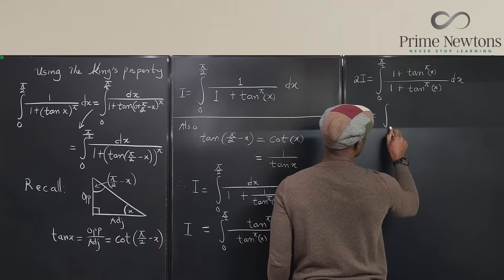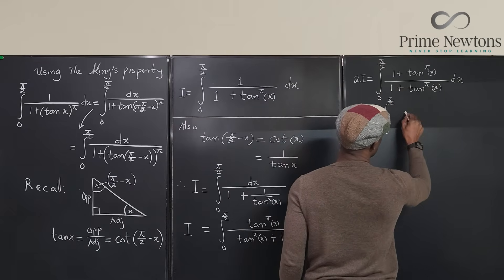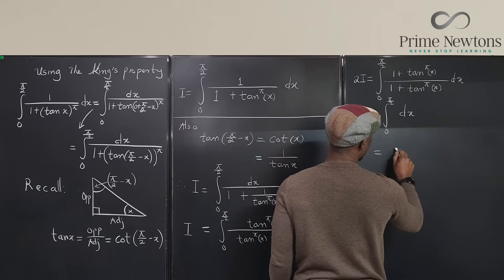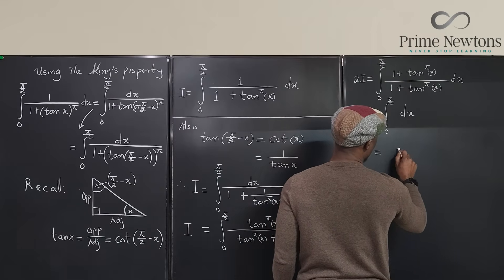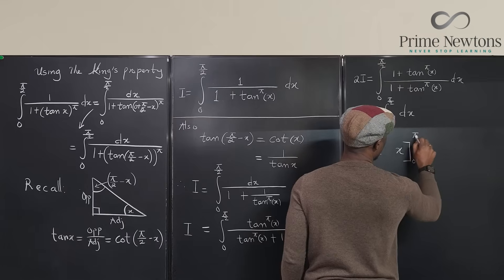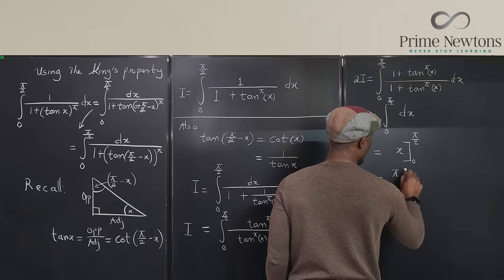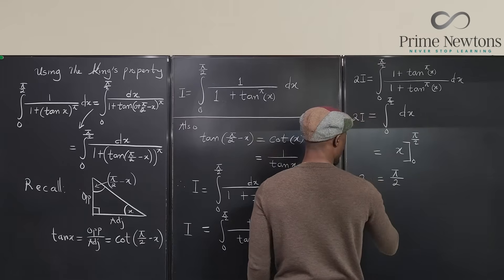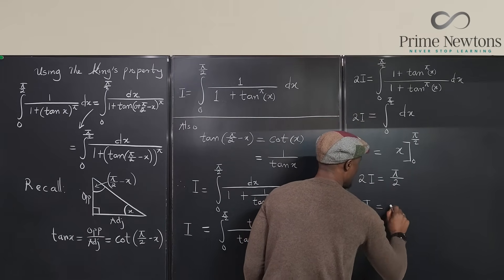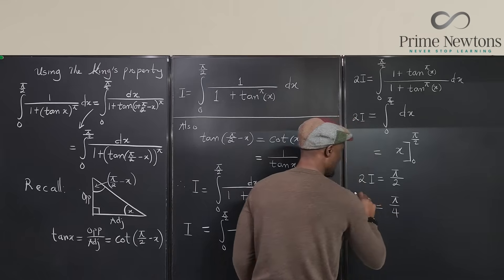The numerator and denominator are identical, so the integrand simplifies to 1. This gives 2I equals the integral from zero to pi over two of dx, which equals x evaluated from zero to pi over two, which equals pi over two. Therefore I equals pi over four.